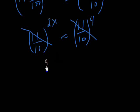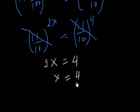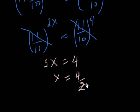Then 2x is equal to 4, so x equals 4 divided by 2, and the answer is 2 years.